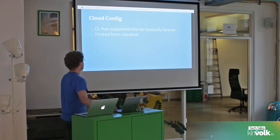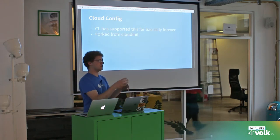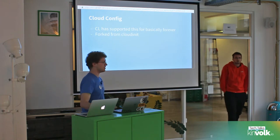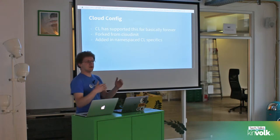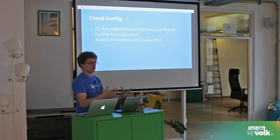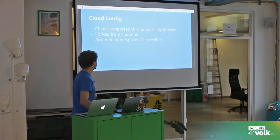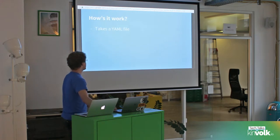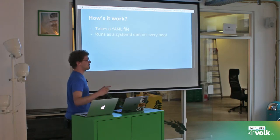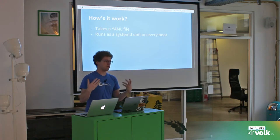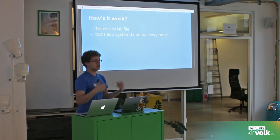We've supported cloud configs for basically forever. It's a YAML file with a pretty sane schema — you can write things like the systemd units you want. There was a project called cloud-init that we forked. Cloud-init runs inside the image and the cloud config is what you give to cloud-init to boot. We also added a namespace for Container Linux specifics, so you can use a normal cloud-init cloud config file from upstream and add a core section that says, for example, please turn on etcd.